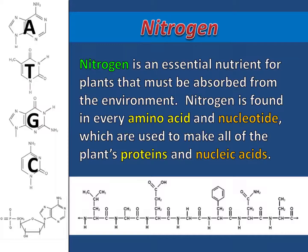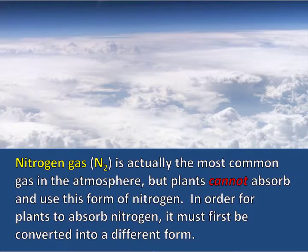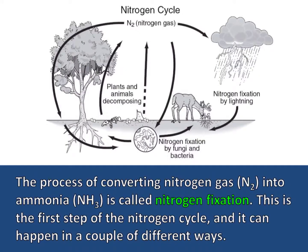Nitrogen is an essential nutrient for plants that must be absorbed from the environment. Nitrogen is found in every amino acid and nucleotide, which are used to make all the plant's proteins and nucleic acids. Nitrogen gas is actually the most common gas in the atmosphere, but plants cannot absorb and use this form of nitrogen. In order for plants to absorb nitrogen, it must first be converted into a different form. The process of converting nitrogen gas into ammonia (NH3) is called nitrogen fixation.